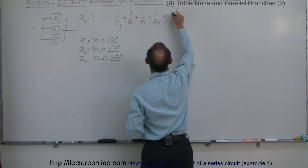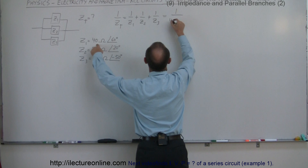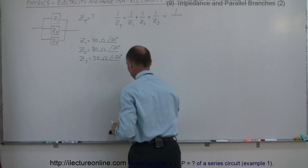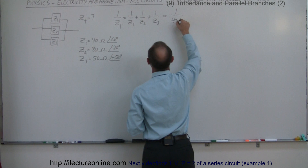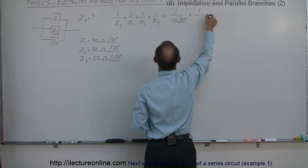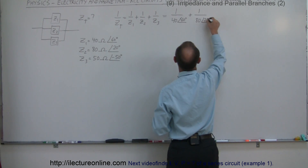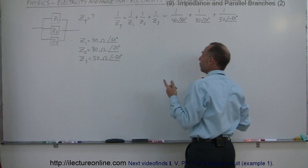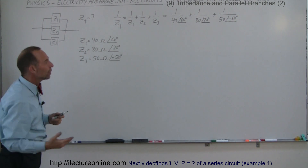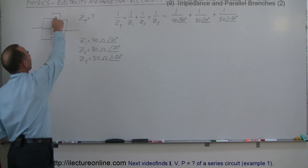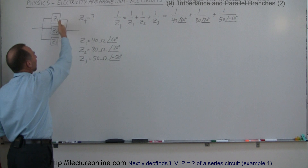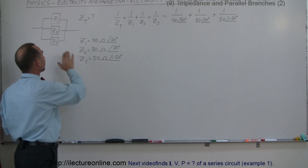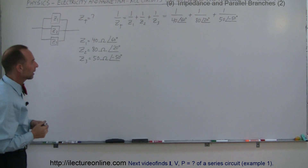So this is equal to one over Z1, and Z1 is 40 at an angle of 60 degrees, plus one over 80 at an angle of 20 degrees, plus one over 50 at an angle of minus 50 degrees. Whenever you have a positive angle it probably has to do with an inductive type branch. The third branch acts like a capacitive branch — we have more capacitance than inductance, so we have a negative reactance angle.